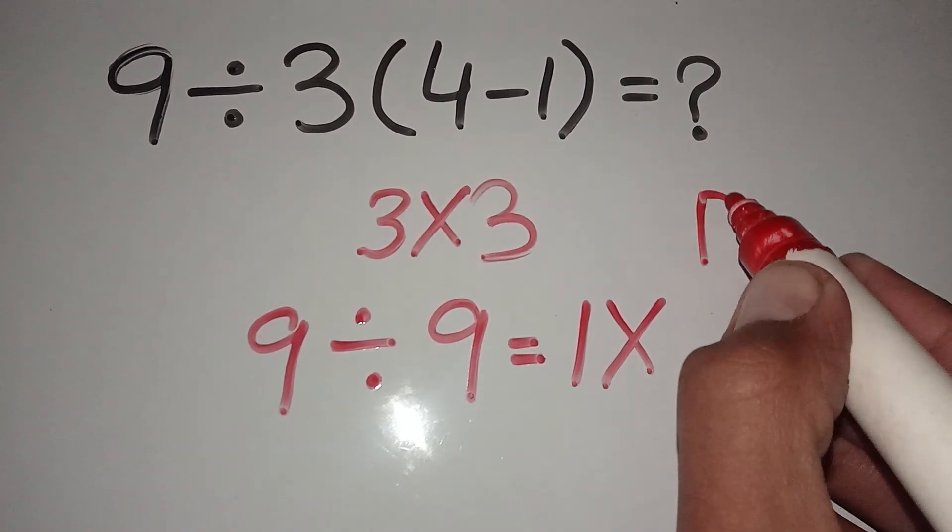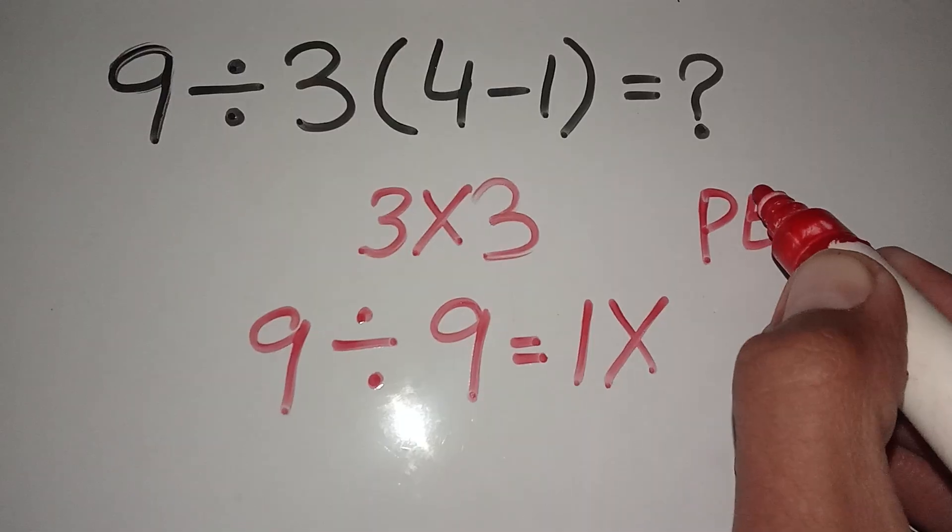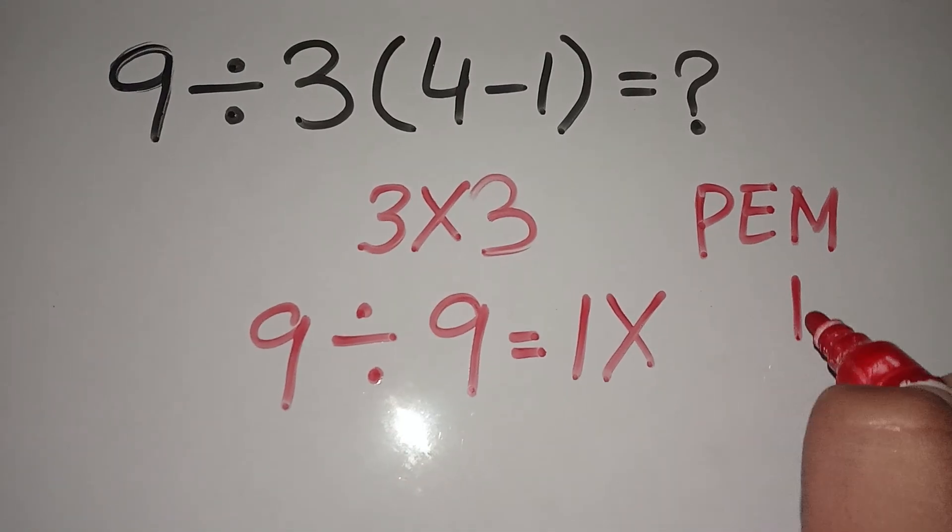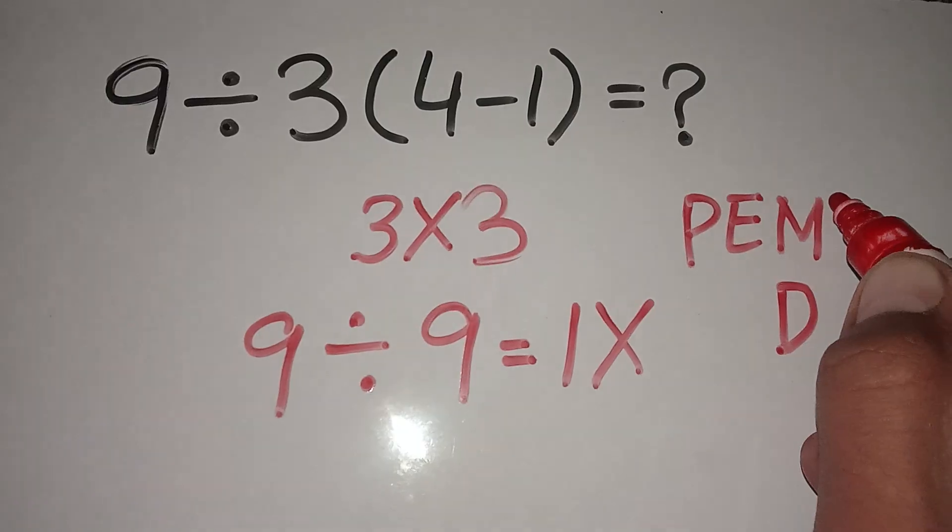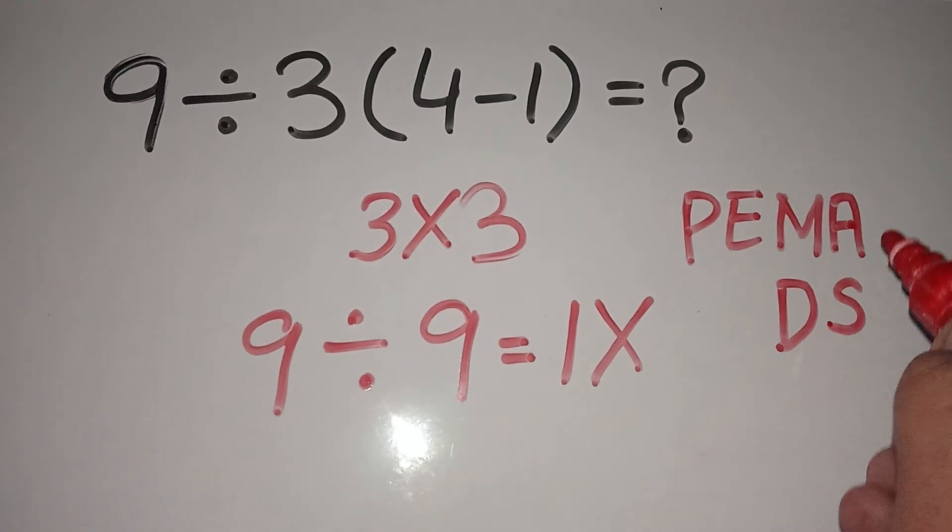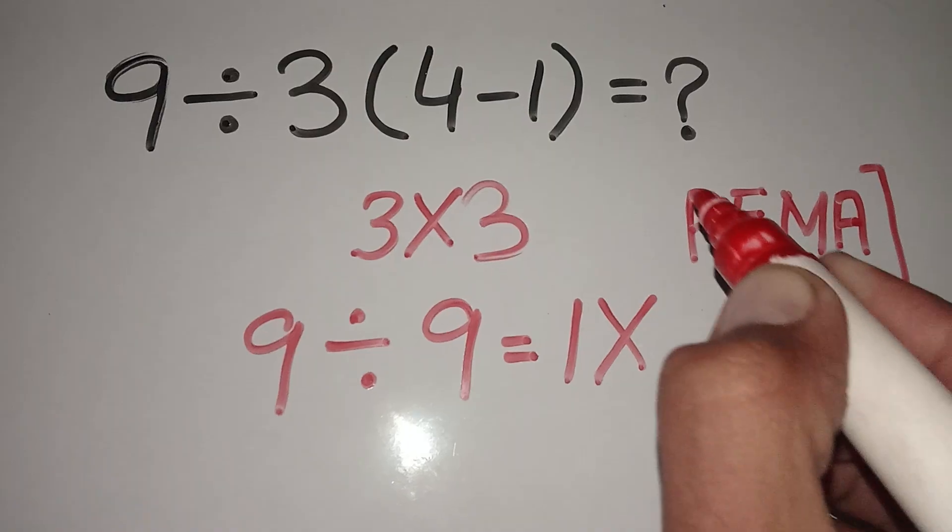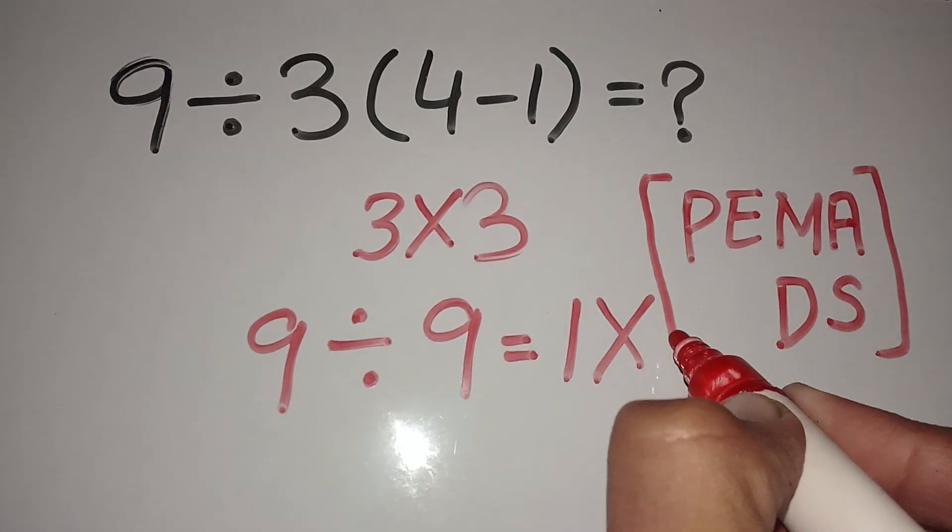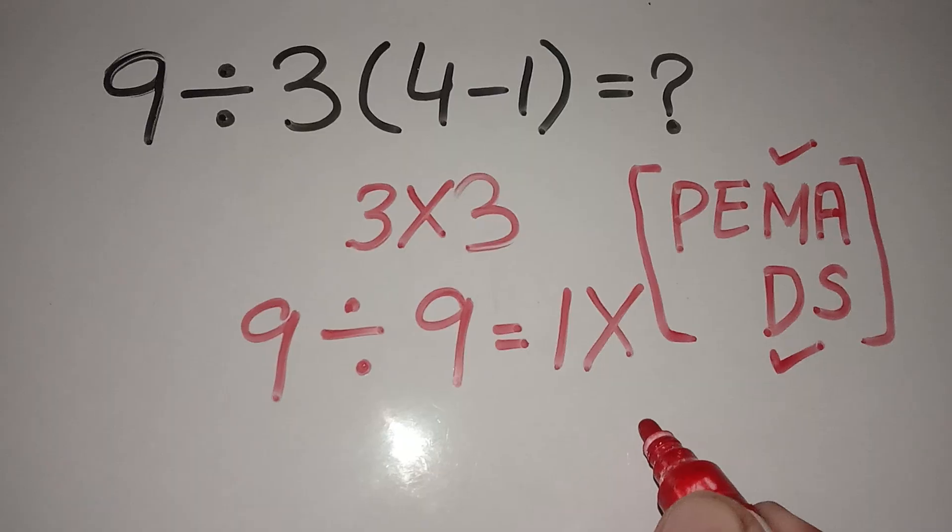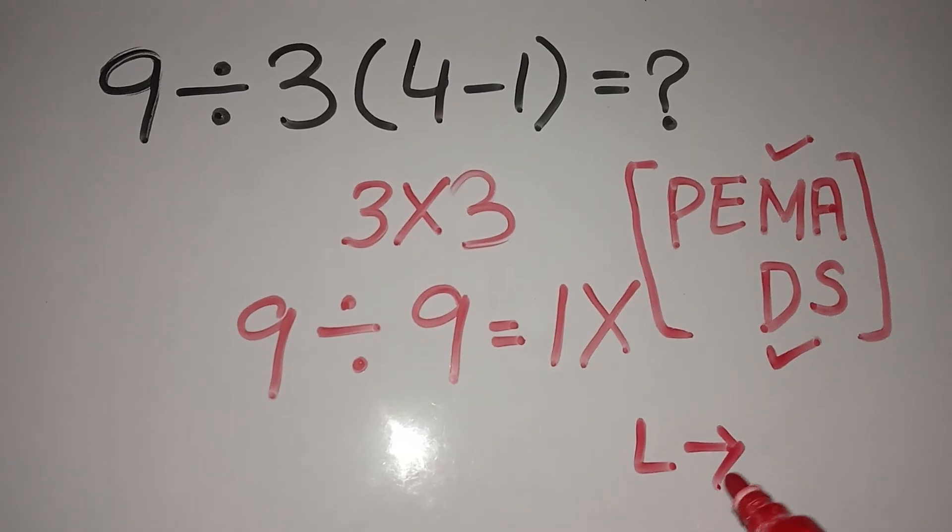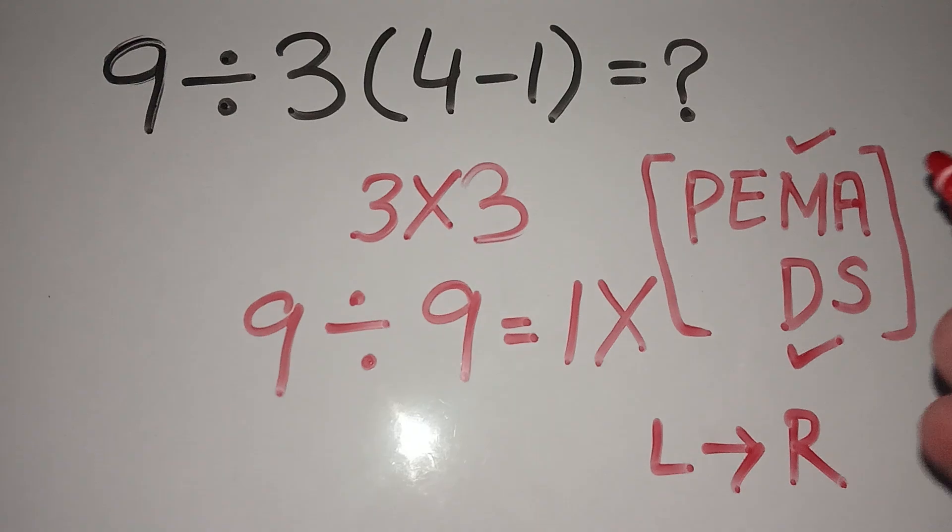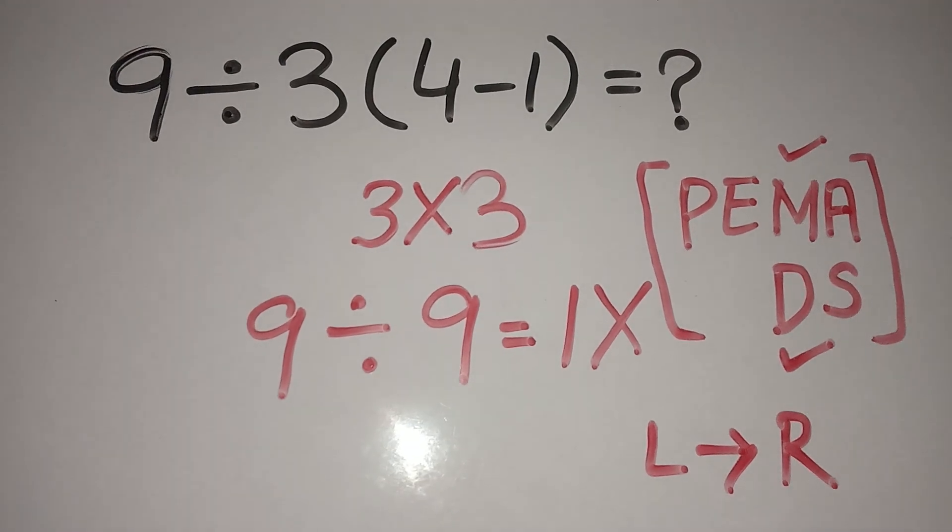Because of the order of operations which is called PEMDAS rule. According to PEMDAS rule, first we solve parenthesis, then exponent, then multiplication and division, after that addition and subtraction. Multiplication and division have equal priority and we solve it from left to right. Similarly, in case of addition and subtraction.